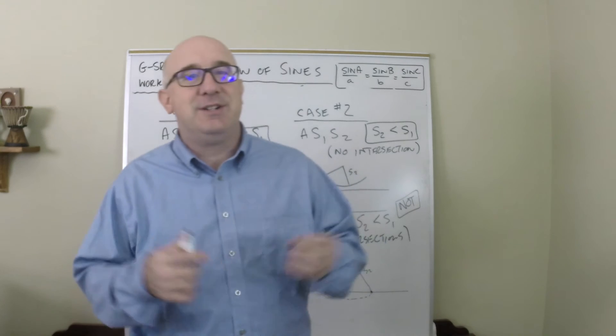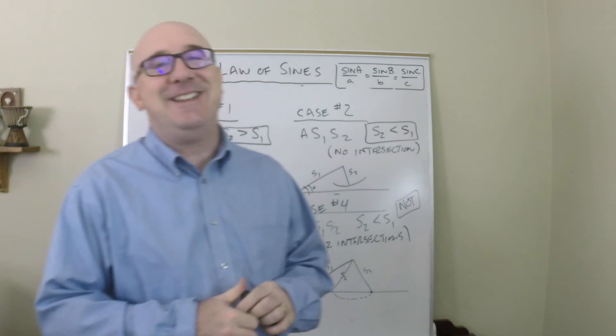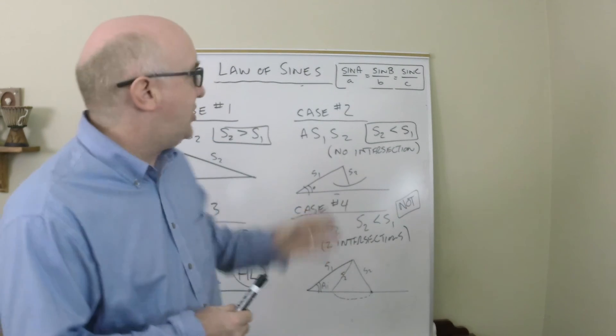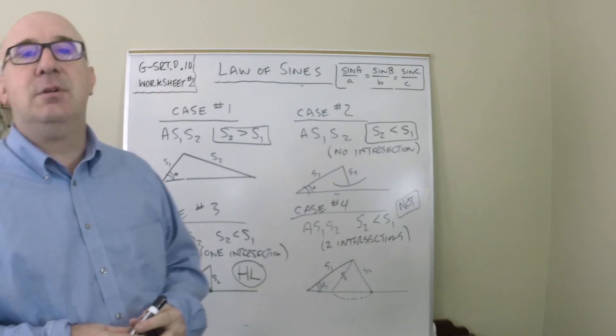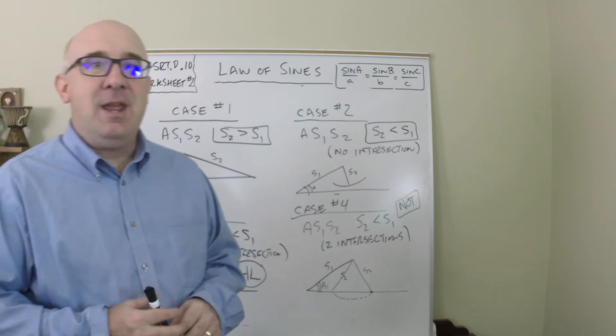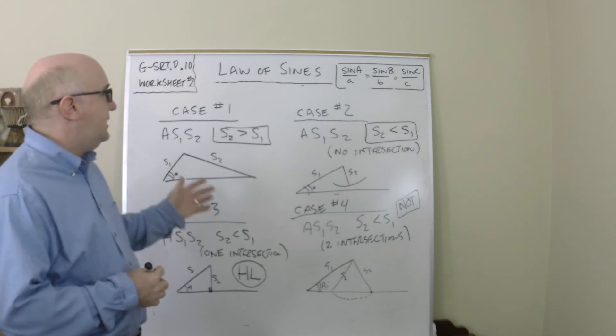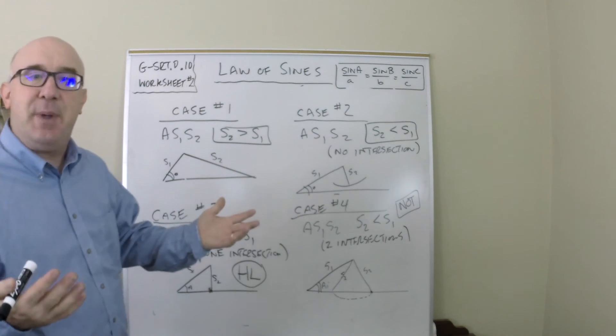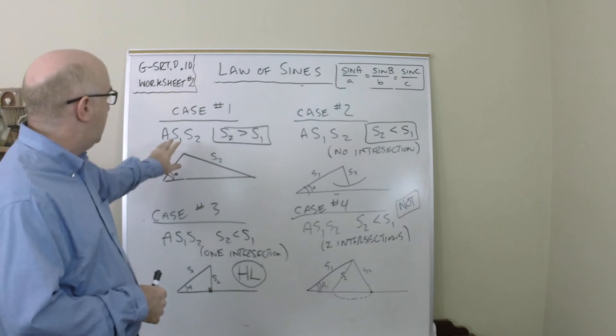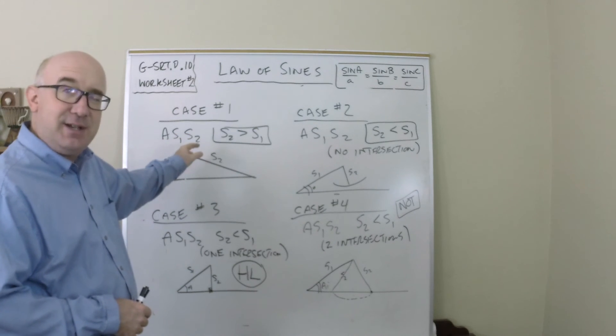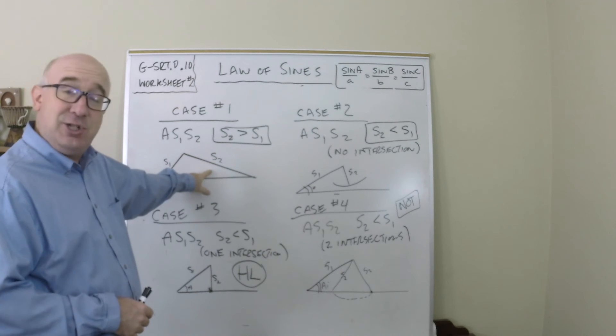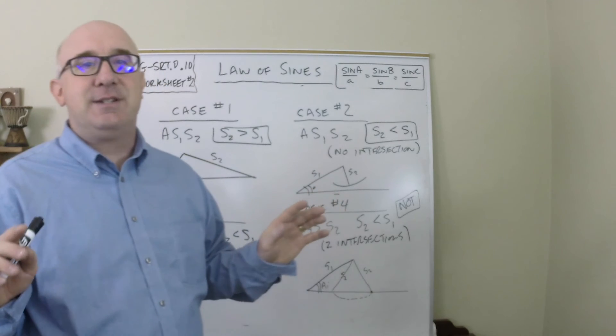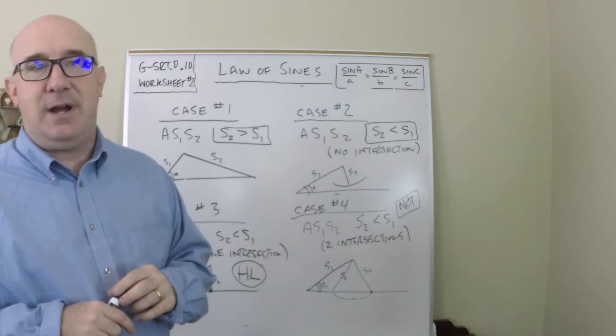Now the problem is, and why we're discussing this, is that angle side side works for the law of sines. But if you don't know which case is in front of you, trouble starts to happen. Now what will happen in each of these cases is that you will be able to recognize what you can expect for an answer. If you look closely at the given information of angle side side, and you notice that side 2 is bigger than side 1, you can proceed with absolute confidence that you'll get a single answer and it will work out fine.